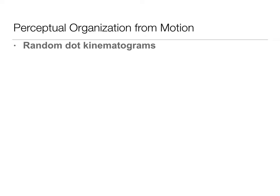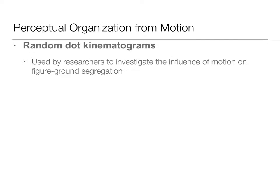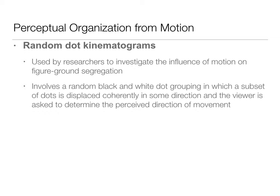Another way we test this is random dot kinematograms. These are used by researchers to really investigate how motion works. We have real-life examples such as the flounder, but researchers want more control in the situation. Random dot kinematograms give researchers more control so they can look at how we use motion to separate the figure from the ground. These involve random black and white dots. Your book has an image of this in Figure 7-13. Here's a video demonstrating them.